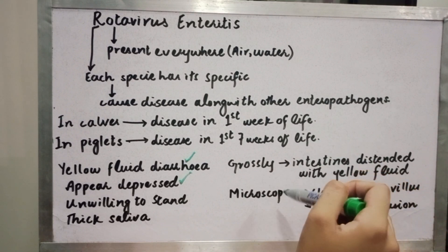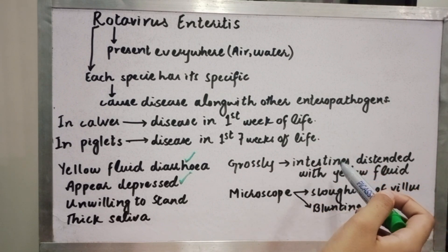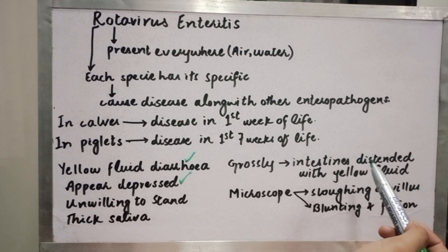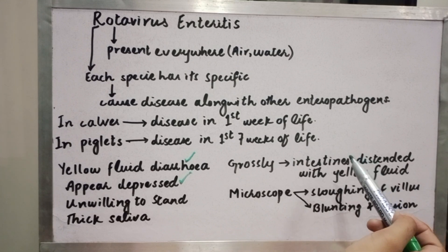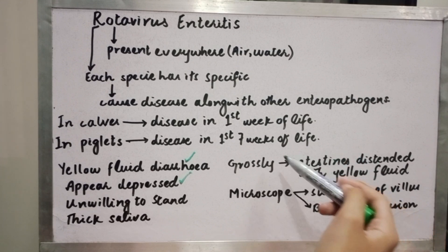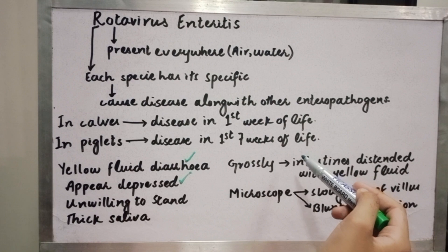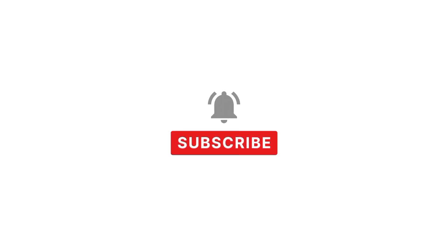This disease starts in the small intestine, specifically the middle and distal small intestine. This is the region most affected by rotavirus.